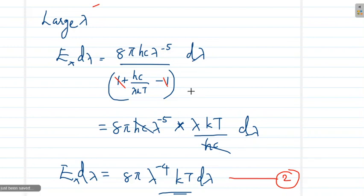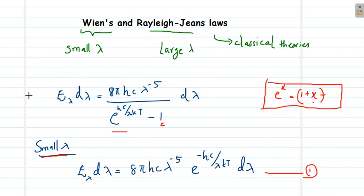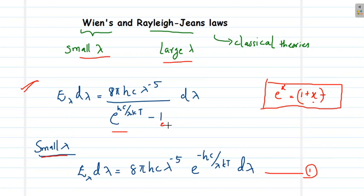So at large values of wavelength, Planck's radiation law reduces to the Rayleigh-Jeans formula, and that is why the Rayleigh-Jeans formula was successful in explaining black body radiation at large values of wavelength. Planck's law includes the whole picture for all wavelength ranges, whereas Wien's theory and Rayleigh-Jeans formula are successful only in certain ranges. The classical theories are just two approximations of this quantum theory when it comes to black body radiation.